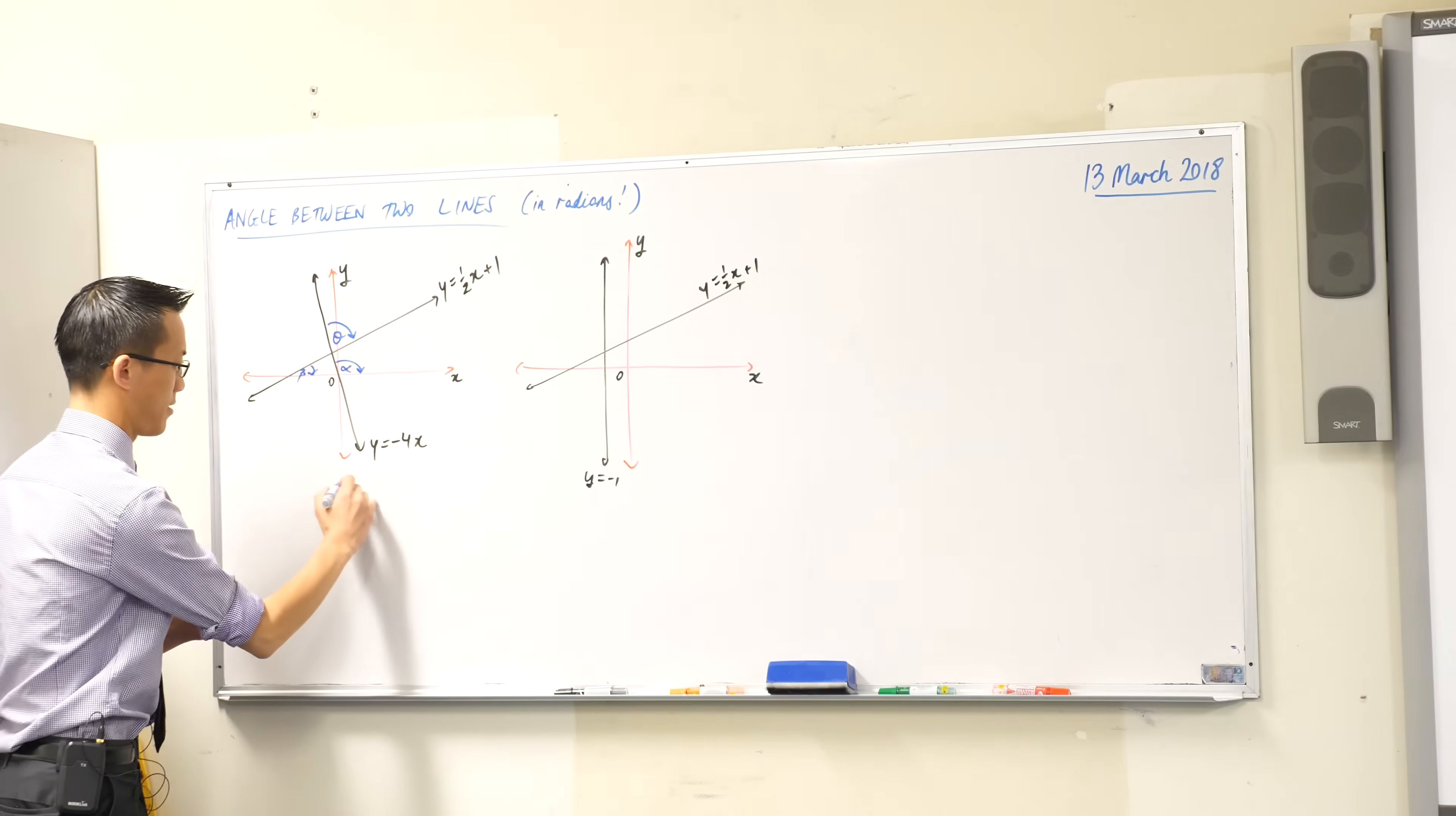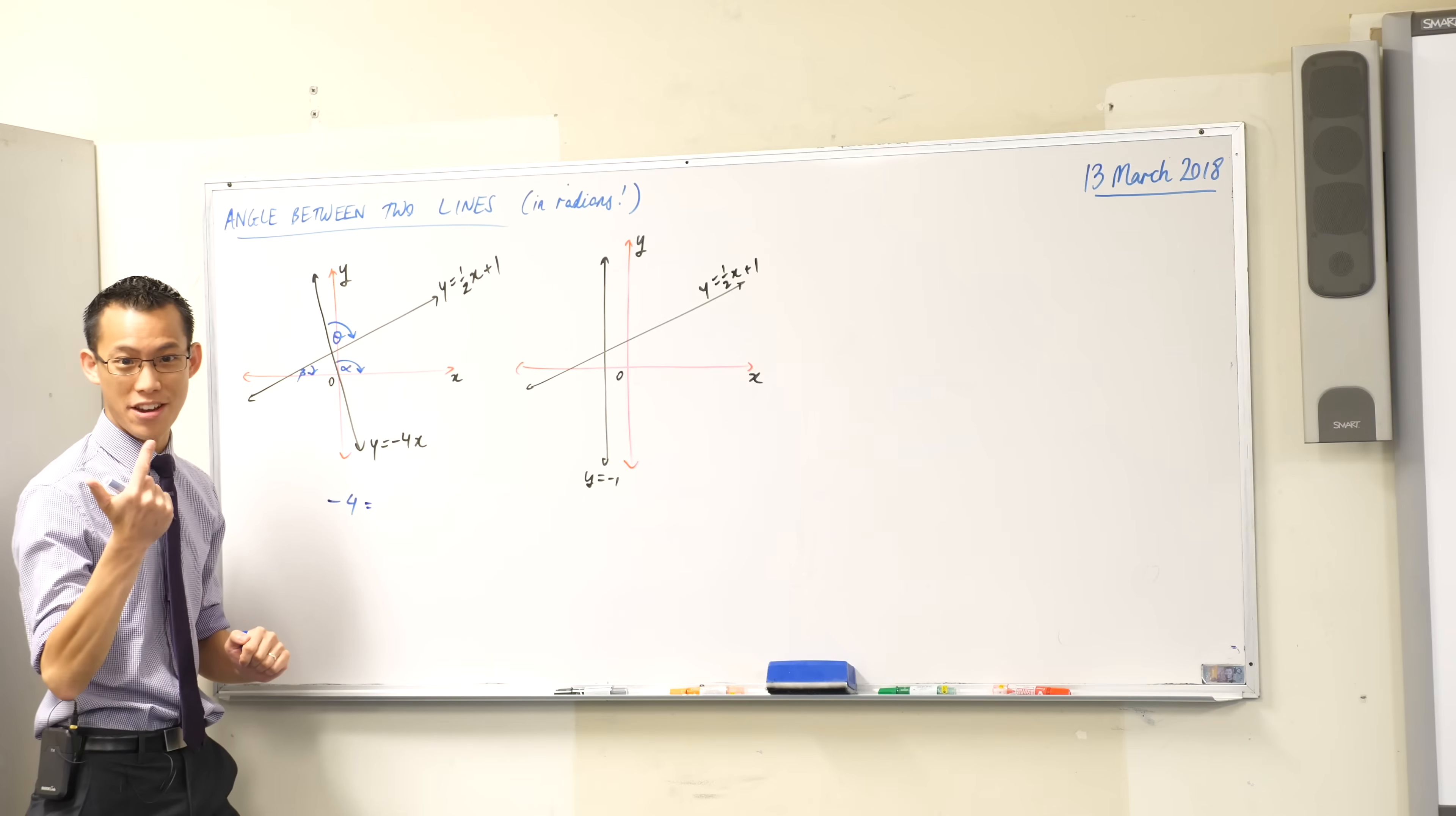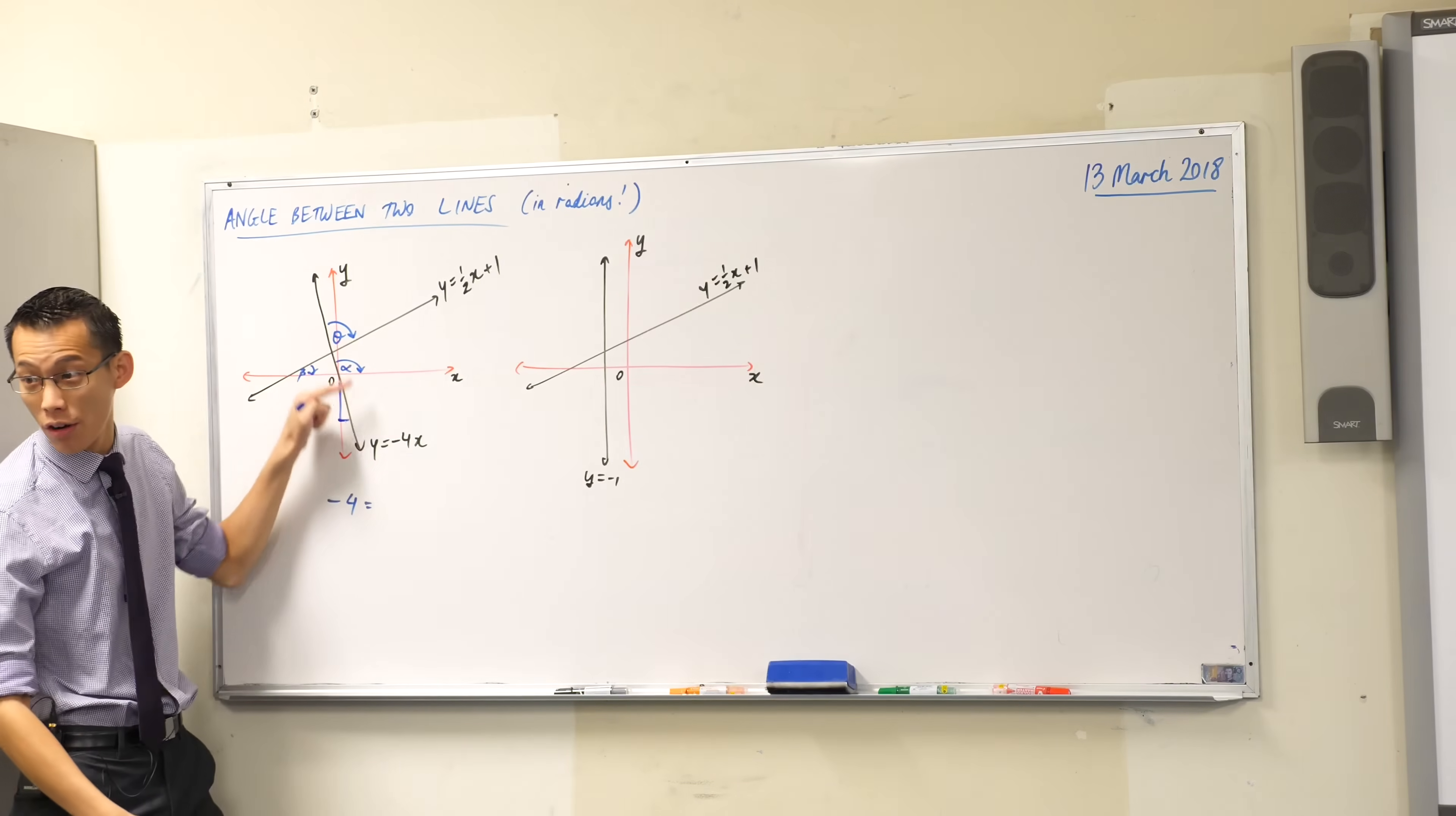What would negative 4, the gradient of this line, have to do with this angle over here? Does anyone remember? It's a two unit formula. Think back. You've got three ratios. I want you to think which one will relate. Remember this is a gradient, right? Gradient is rise over run. If I put in like a rise and a run, it's going to be tan, isn't it? Because you're not interested in the hypotenuse.